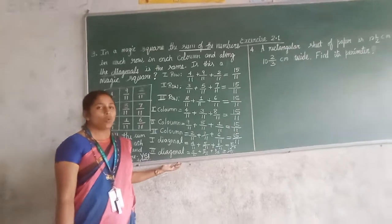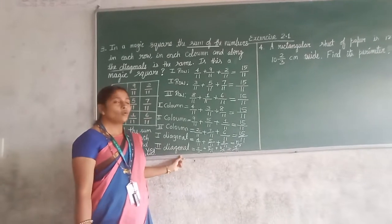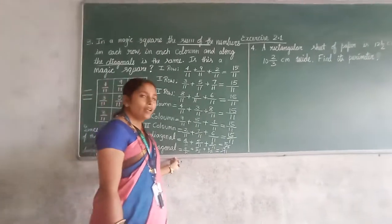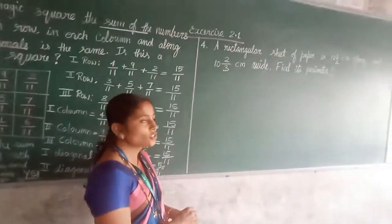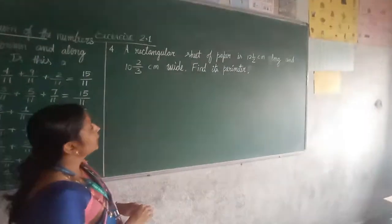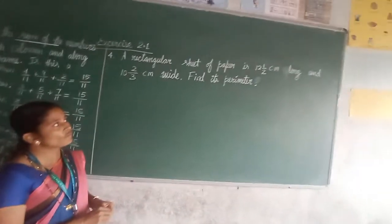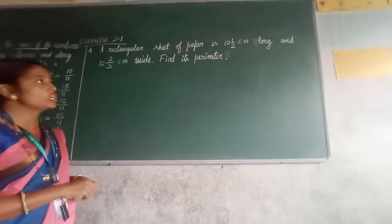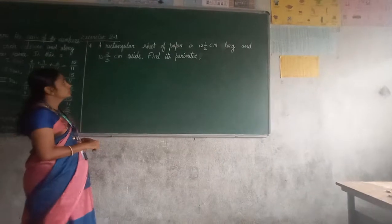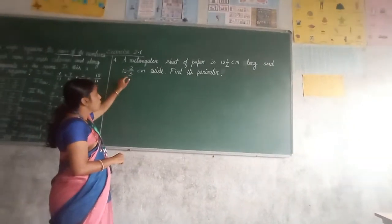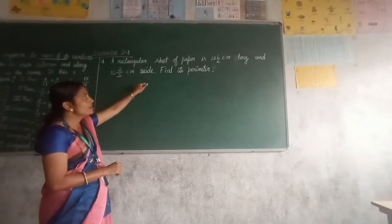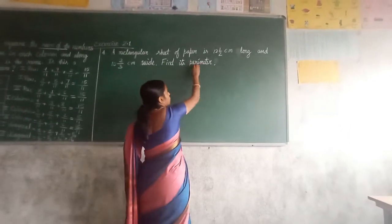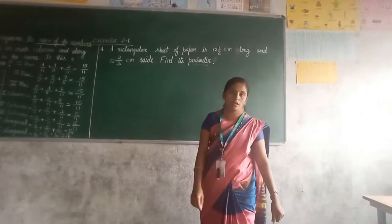Hope you understood how to check the magic square. This is just like a one type of game. Now let us switch on to the next question. That is fourth question. A rectangular sheet of paper is 12 and half centimeter long and 10, 2 upon 3 centimeter wide. Find its perimeter.